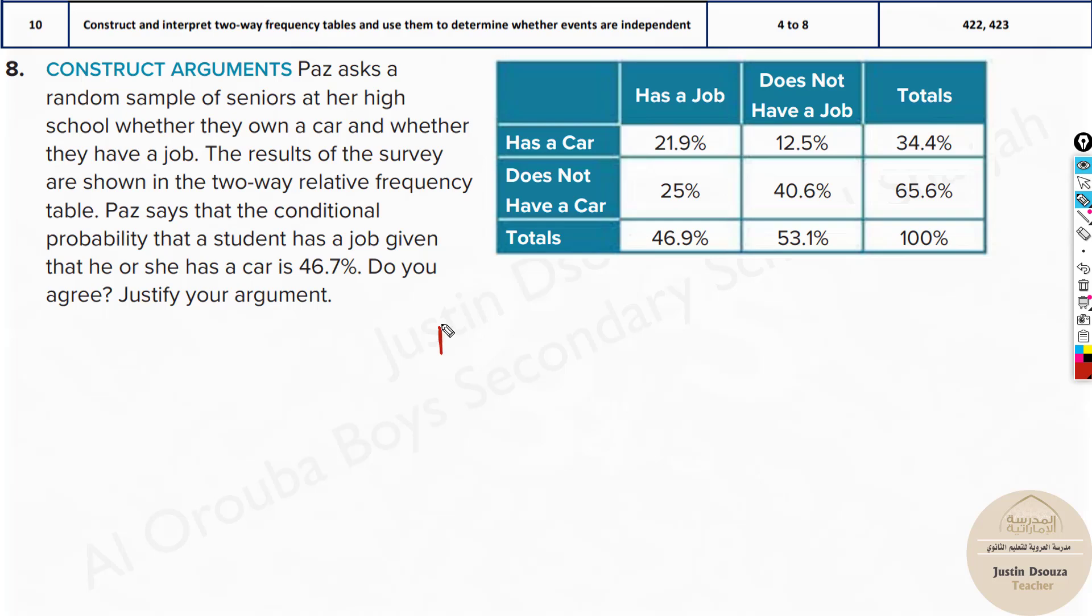What is the conditional probability that a student has a job given that he or she has a car? So job given car: probability of job and car needs to be known, and probability of just car. Probability of car. So what is probability of job and car? Has a job and has a car, it is 21.9% divided by probability of car, that's over here, the total 34.4%.